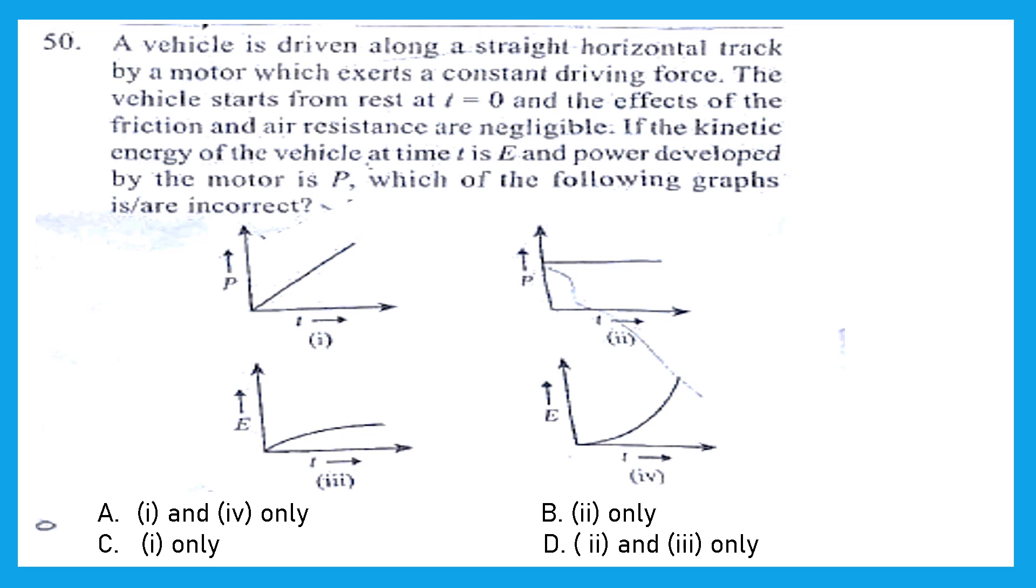Now let's first see which are correct. Correct are 1 and 4. 1 because power is equal to P is equal to FV, and it is going to be a straight line, linear straight line. And the relationship between kinetic energy and time is going to be a parabola of increasing slope. So 1 and 4 are correct. And if 1 and 4 are correct, then the incorrect ones are 2 and 3 only. Option D is the right answer.